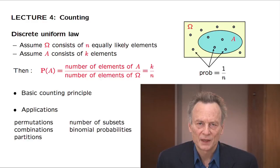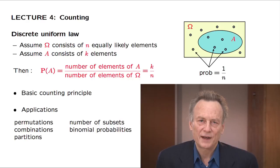Suppose that we have a probability model in which the sample space, omega, is finite and consists of n equally likely elements. So each element has probability 1 over n. Suppose now that we are interested in the probability of a certain set, A, which has k elements.